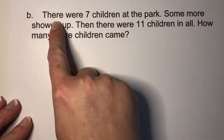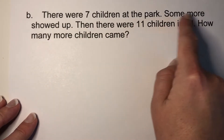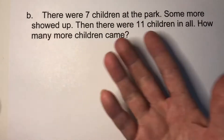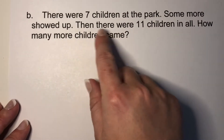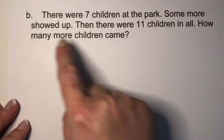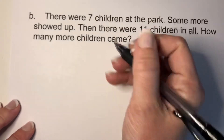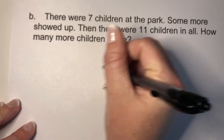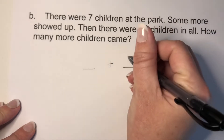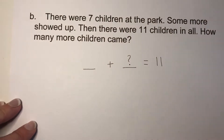So let's read the problem first. There were seven children at the park. Some more showed up — notice that — some more showed up. We don't know how many more. Then there were eleven children in all. How many more children came? This time we are still going to write an equation, but we're not exactly going to know how many more children came to make eleven children in all.